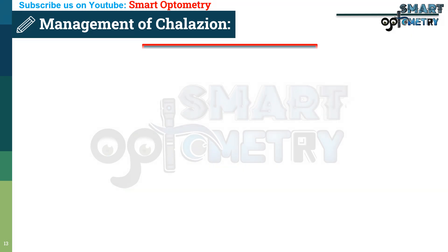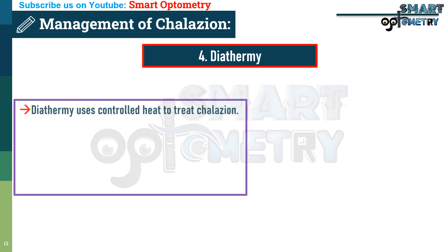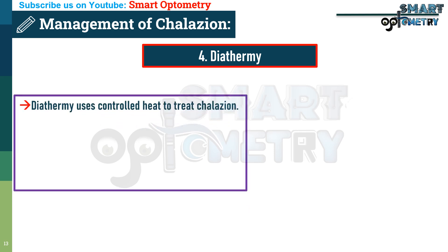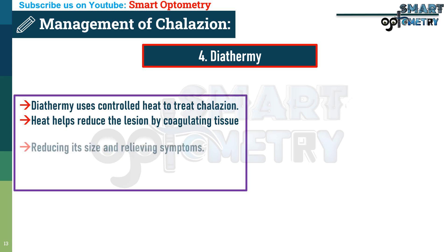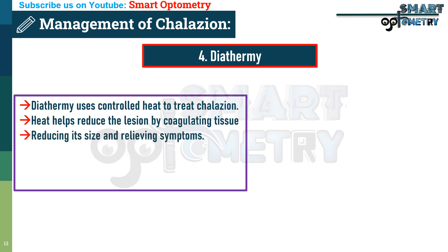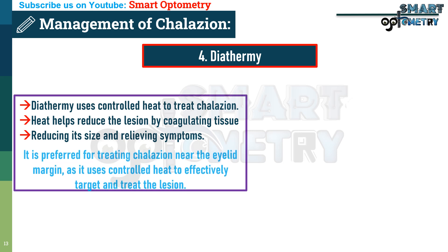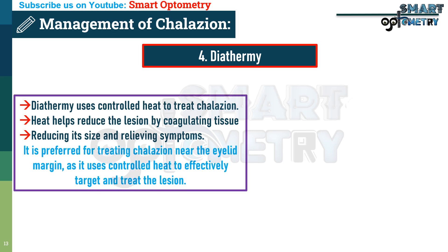Diathermy is a technique that uses controlled heat to treat chalazion. The heat helps reduce the lesion by coagulating tissue within the chalazion, reducing its size and relieving symptoms. Diathermy is preferred for treating chalazion near the eyelid margin, as it uses controlled heat to effectively target and treat the lesion.